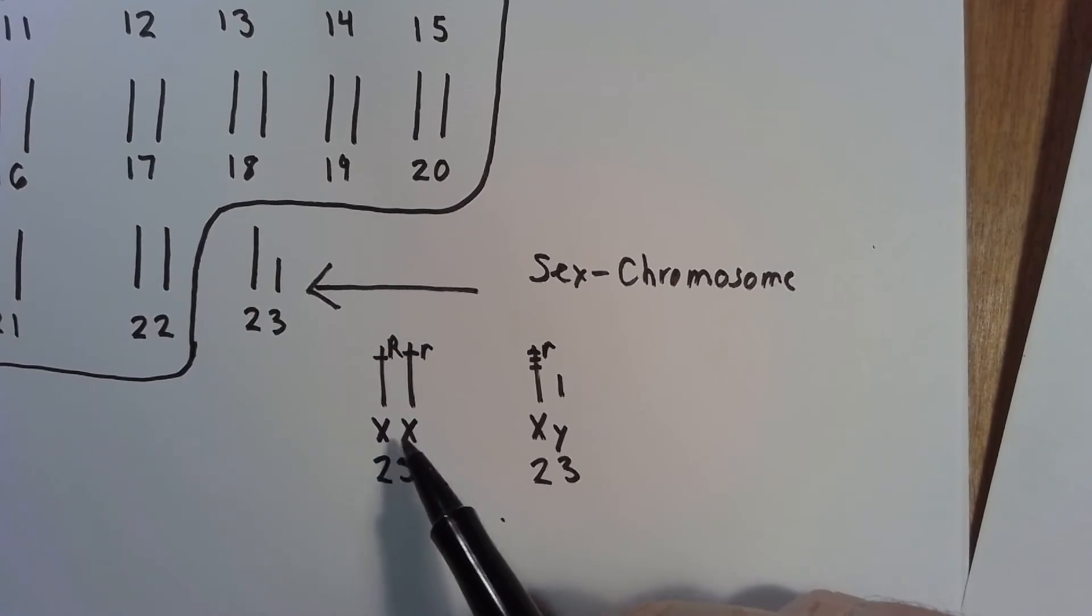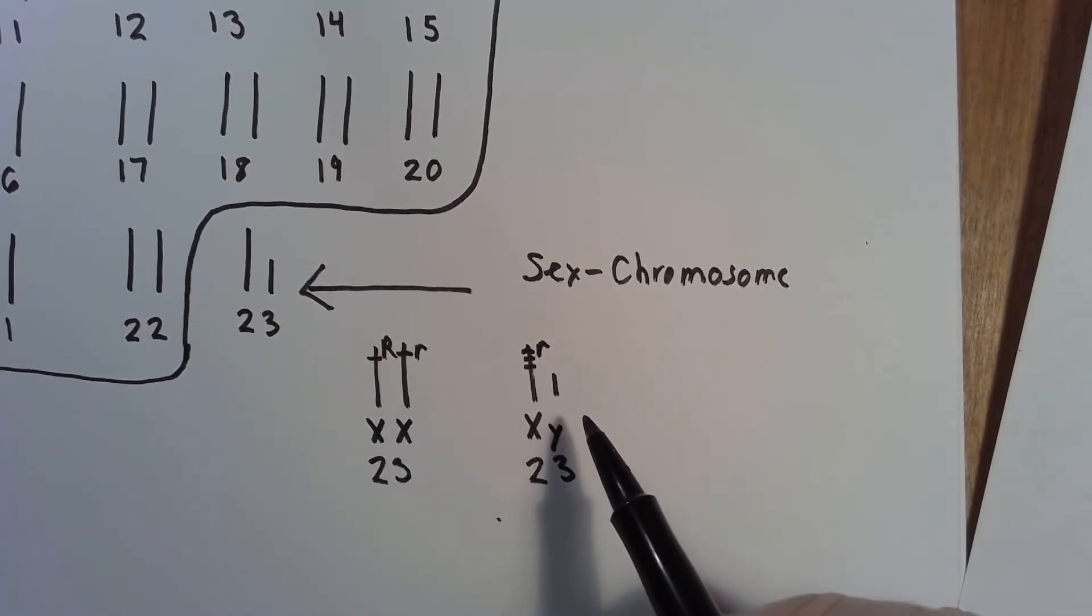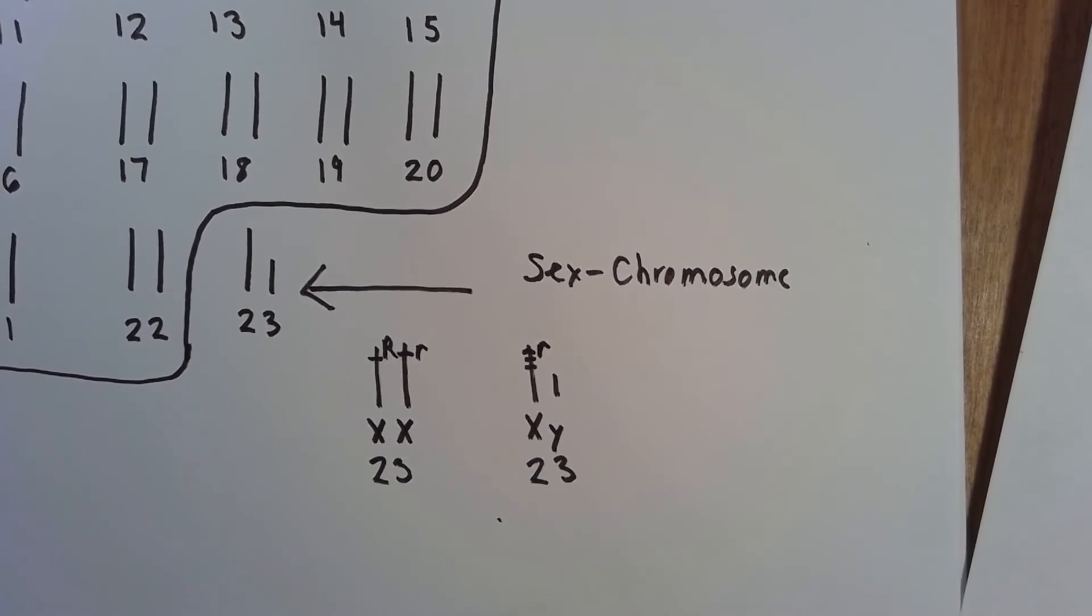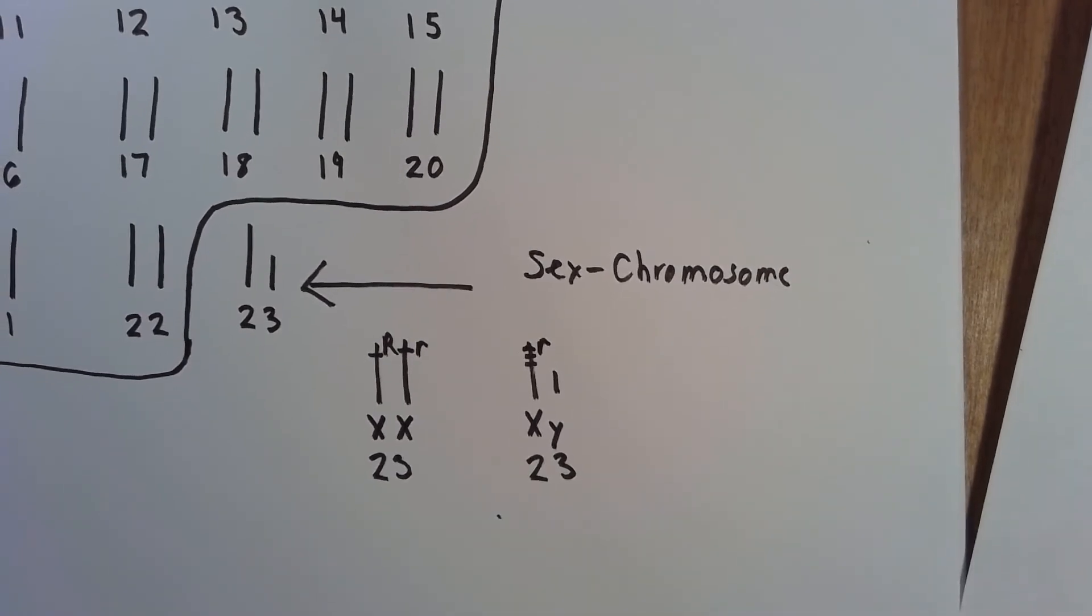But with a sex chromosome, if you're a female, you have the same, XX. But if you're a male, you have X and a Y. And the Y doesn't code for much. It only codes for if you're a male, determining if you're male or female. And it's actually losing genes, they say, over time. So right now it has 200 different genes.